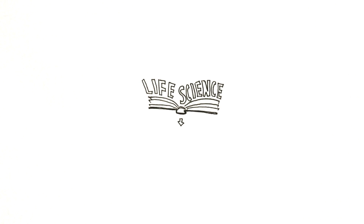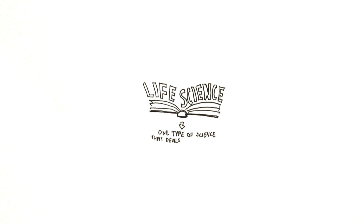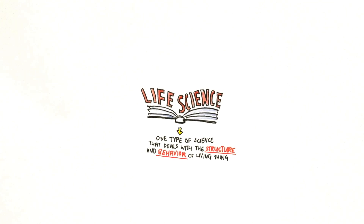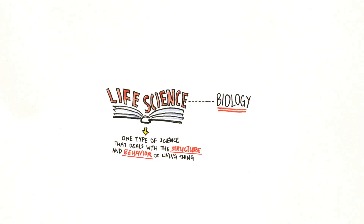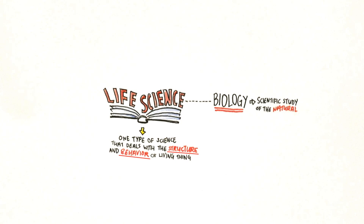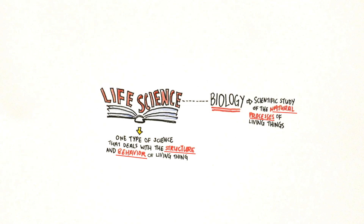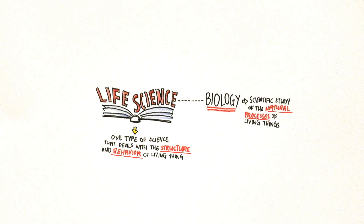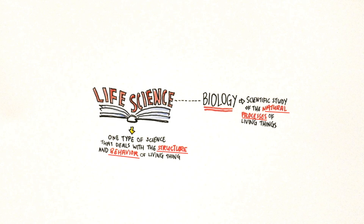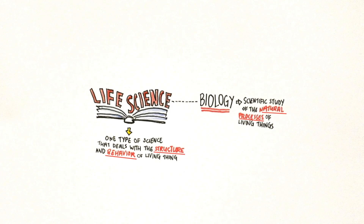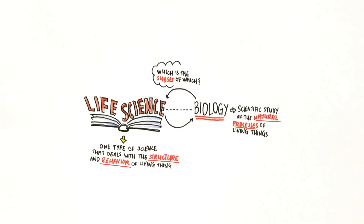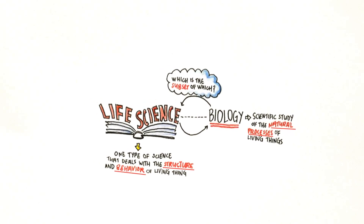The Cambridge Dictionary defines life science as one of the types of science that deal with the structure and behaviour of living things. Biology is defined as the scientific study of the natural processes of living things. In order to learn the natural processes of living things, one would need to know their structure and behaviour. So is life science a subset of biology, or is biology a subset of life science?